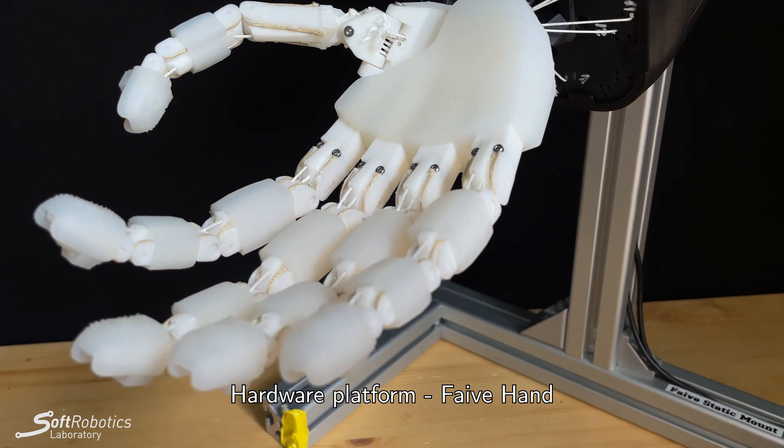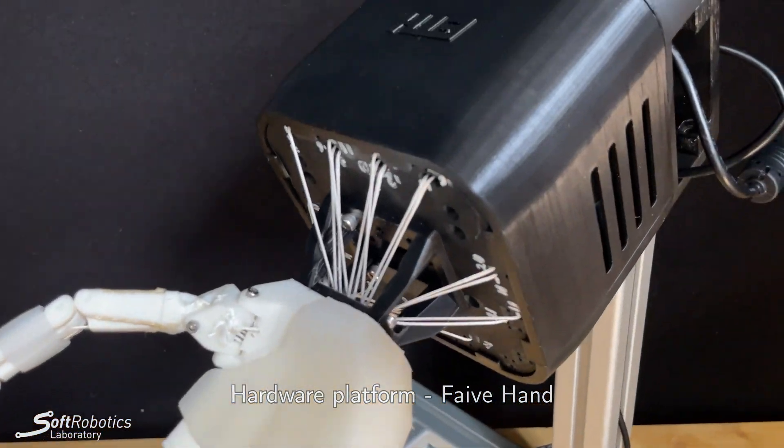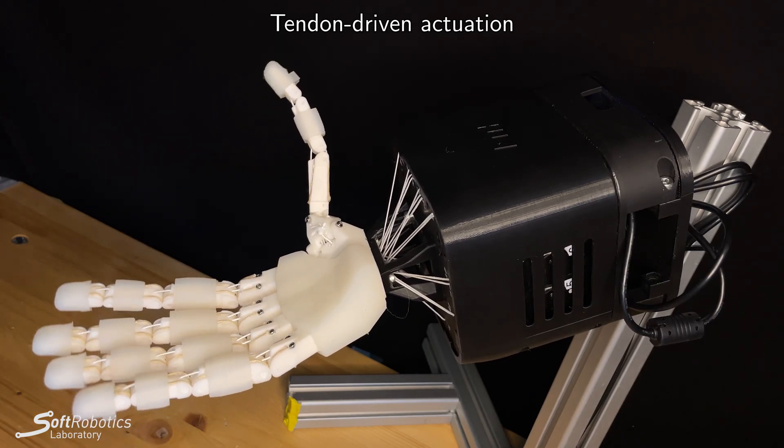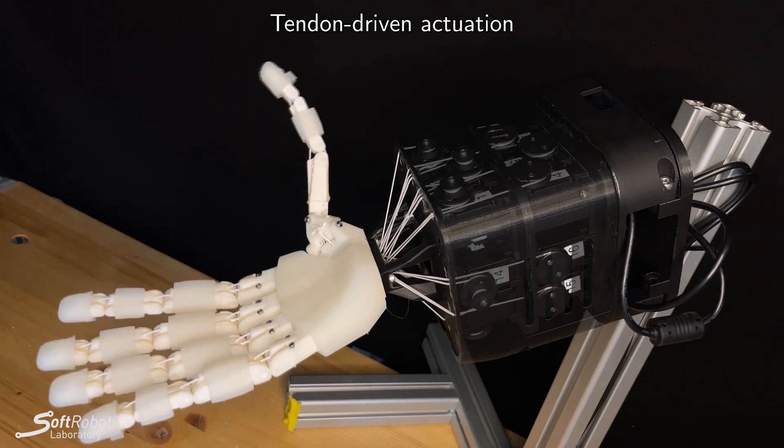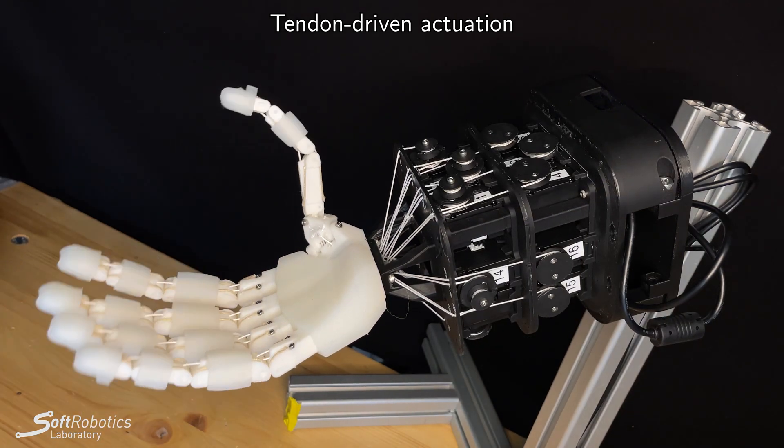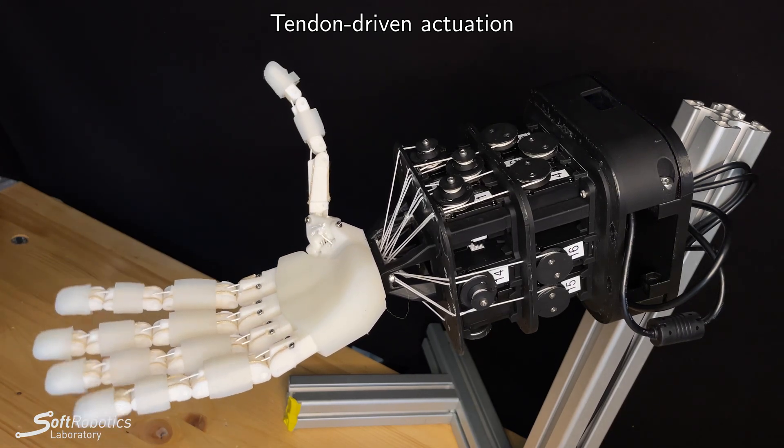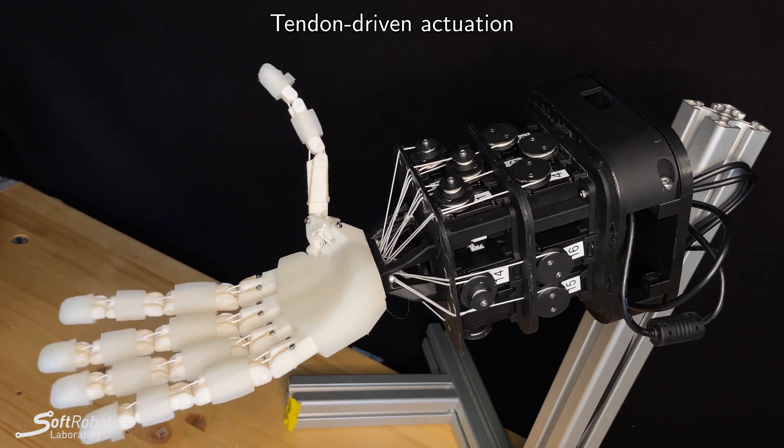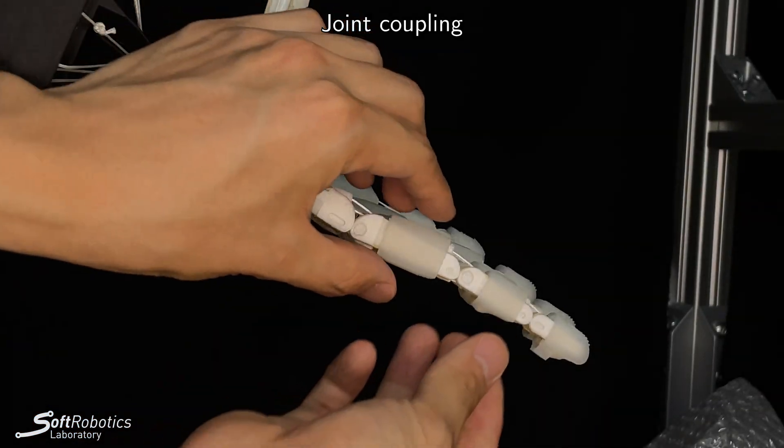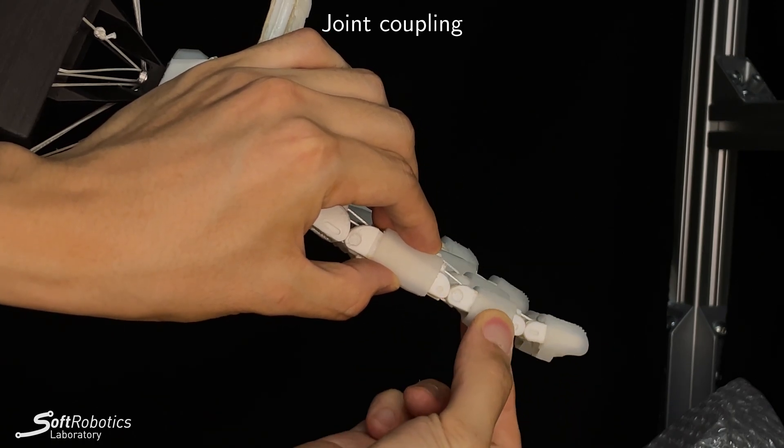The Faive Hand is a biomimetic robotic hand designed for researching dexterous manipulation. It has 11 degrees of freedom replicating many of the joints seen in the human hand. The Faive Hand is tendon-driven, being actuated by 16 Dynamixel motors located at the wrist. The distal joints of each finger are coupled, and thus there are 16 joints in total for 11 degrees of freedom.